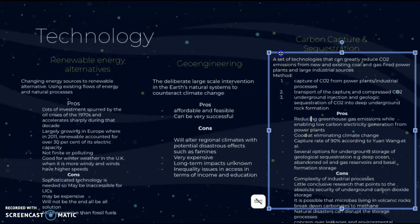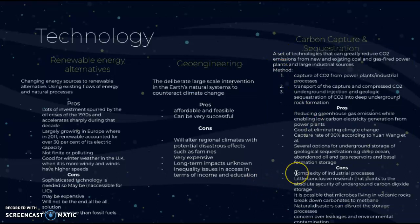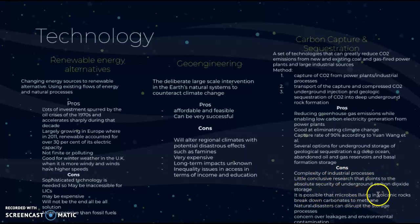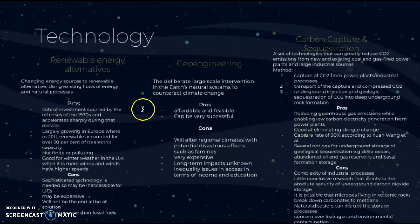The pros of carbon capture and sequestration are that it reduces greenhouse gases whilst enabling low-carbon electricity generation from power plants. According to Yuan Wang, it has a capture rate of 90 percent. There are also several options for underground geological sequestration, such as in the deep ocean and abandoned oil and gas reservoirs. The cons are that there is large complexity in the industrial processes, little conclusive research on the absolute security of underground CO2 storage, the possibility that microbes in volcanic rocks break down carbonates to methane, and concerns about natural disasters disrupting storage and causing leakages and environmental contamination. These are the main options governments have to mitigate and adapt to the impacts of global climate change.